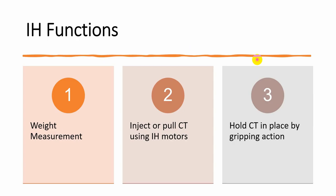You may have now identified the functions of the injector head. First, it measures the weight of coiltube being injected into or pulled from the well. Second, it injects or pulls the coiltube using hydraulic motors, sprockets, chain, traction pressure, and chain tension — all incorporated together. It also holds the coiltube in place through the gripping action of the gripper blocks. Those are the main functions of the injector head.